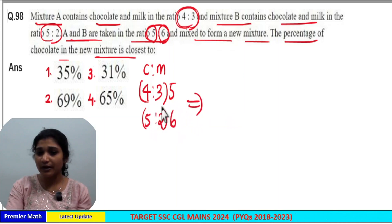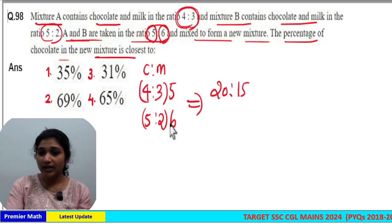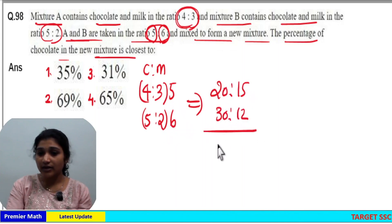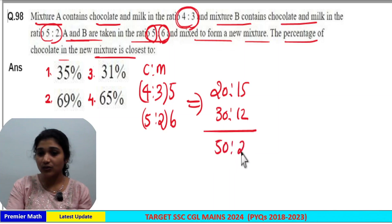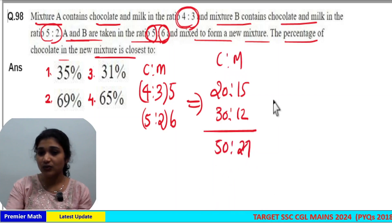So just multiply: 5 into 4 is 20, and 5 into 3 is 15. And 6 into 5 is 30, and 6 into 2 is 12. Adding these together gives us a ratio of 50 to 27. So in the new mixture, chocolate and milk is in the ratio of 50 to 27.